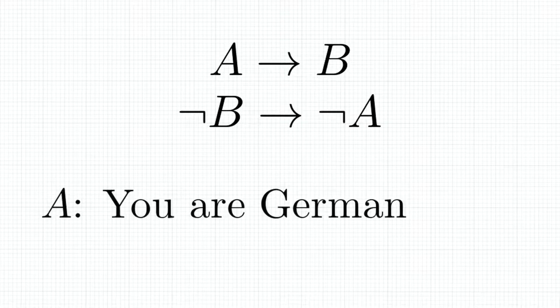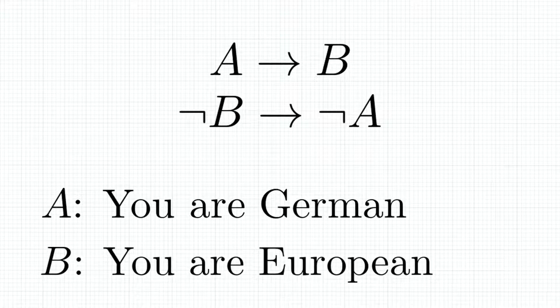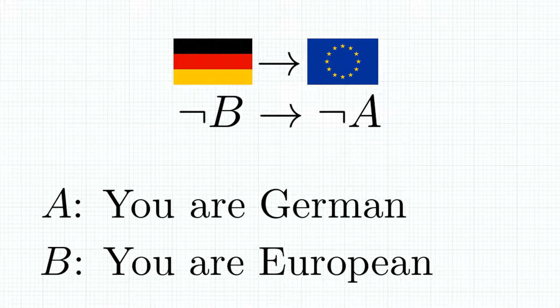Let's say statement A is you are German and statement B is you are European. Now the statement A leads to B translates to if you are German, then you're also European, which of course is completely valid since Germany is part of Europe. But let us look at the contraposition.